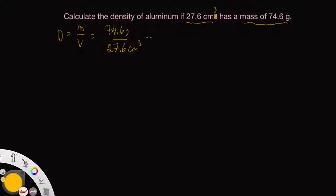If you punch that into your calculator, we get 2.702898551, and so forth. We want to round this to the correct number of significant figures.